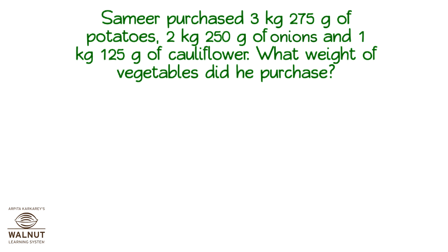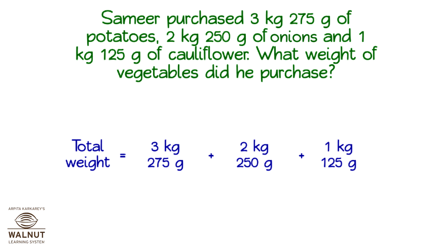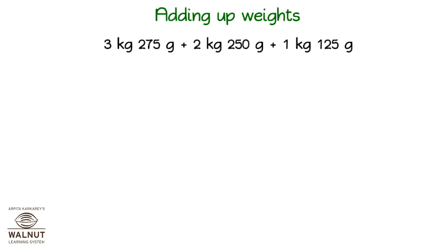Samir purchased 3 kg 275 grams of potatoes, 2 kg 250 grams of onion, and 1 kg 125 grams of cauliflower. What weight of vegetables did he purchase? What do we have to find out? The total weight of vegetables purchased. Total weight equals weight of potatoes plus weight of onions plus weight of cauliflower. We know all three weights. When we add them up we get the total weight. We write the units, below that we write the measures.